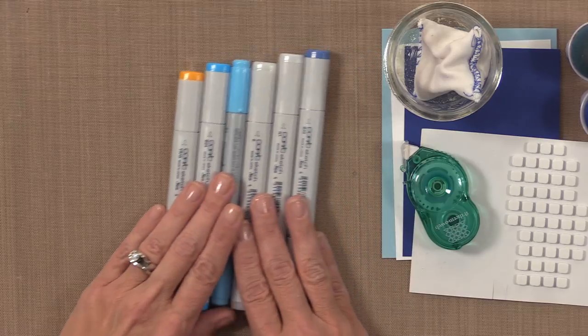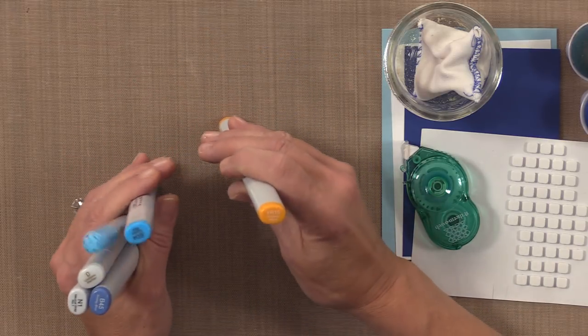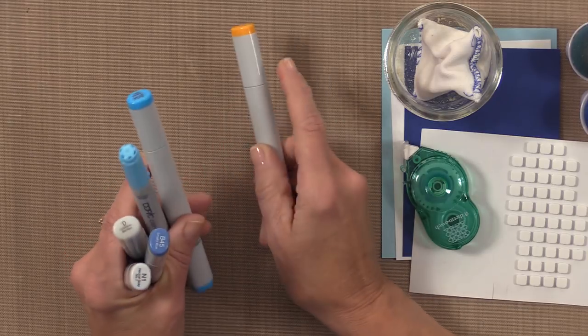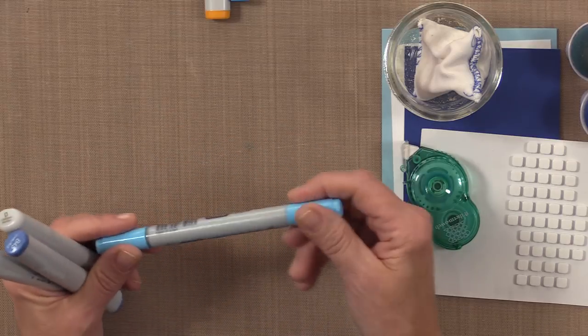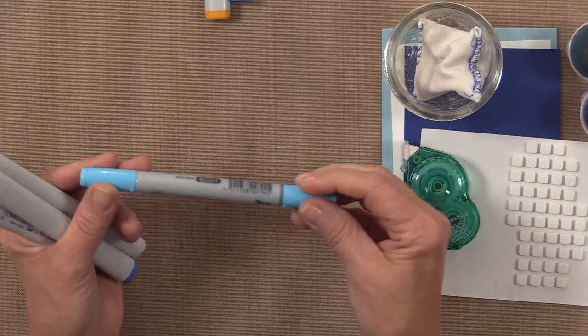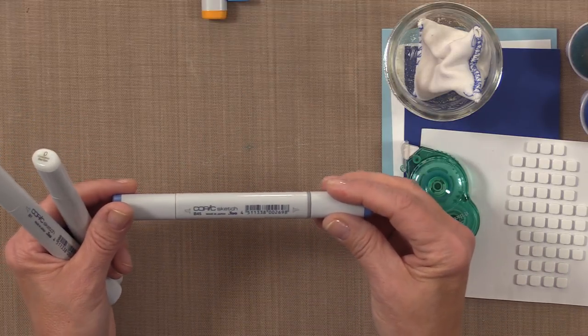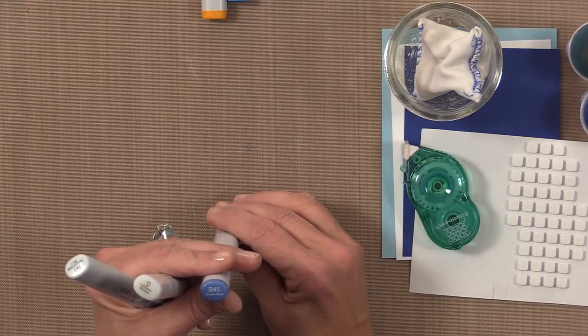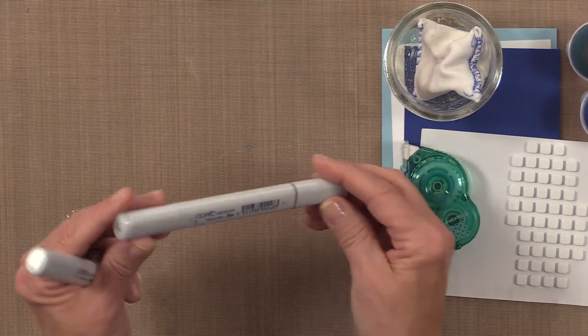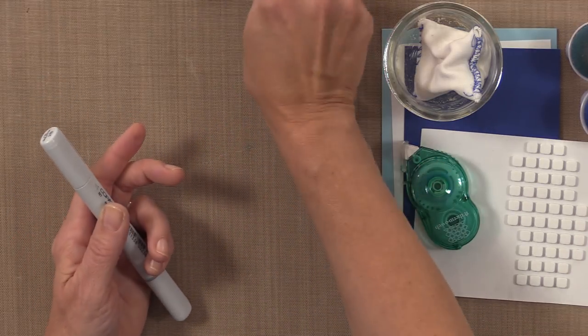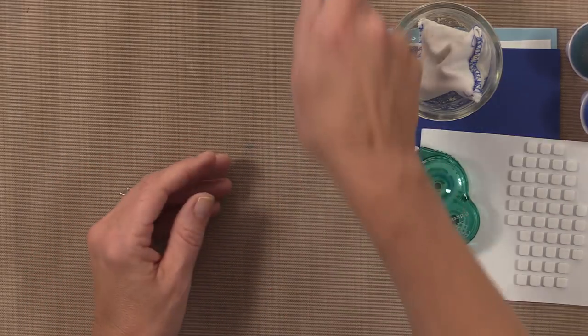Then I'm going to use some Copic markers. The colors are YR15 which is Pumpkin Yellow, B04 which is Tahitian Blue, BG01 which is Aqua Blue, B45 which is Smokey Blue. I'm not sure I'm going to use all of these, but these are the ones I grabbed. I'm going to use the Colorless Blender Pen possibly, and N1 which is Neutral Gray 1.